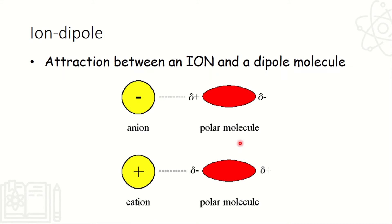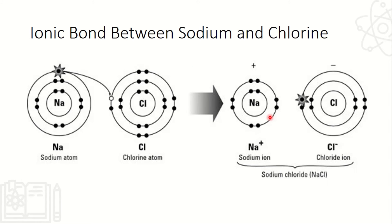And then, ion-dipole. So pag maliligaw, sino ang nag-bond? Yung ion saka yung dipole. Merong presence ng ion, merong presence ng polar molecule or dipole molecule — kasi kaya nga siya dipole, polar siya, merong positive negative. Ano ba yung ion? So ions are the atoms that are formed by means of ionic bonding. Bakit nagkakaroon ng ionic bonding? Kasi masyadong mataas yung diferensya ng electronegativity nila, such as sodium and chlorine.